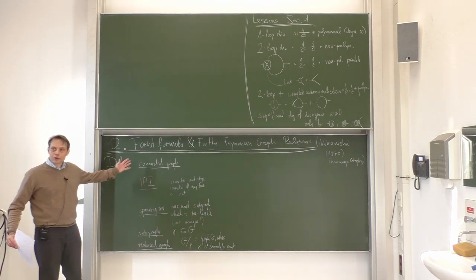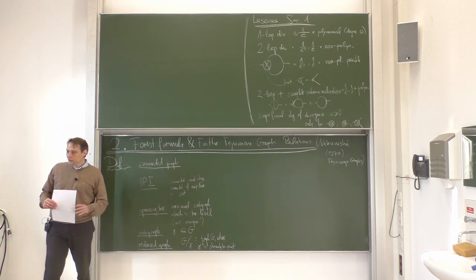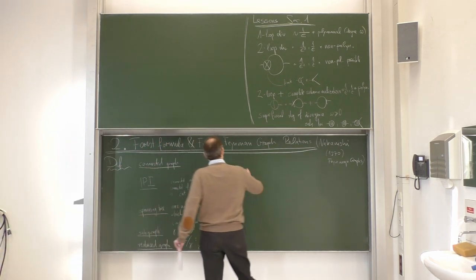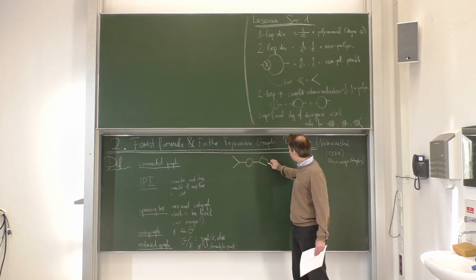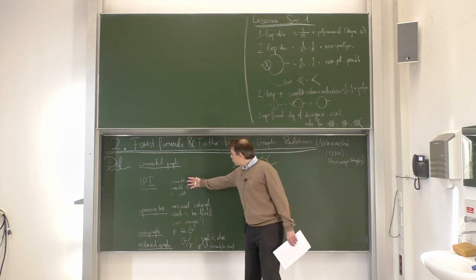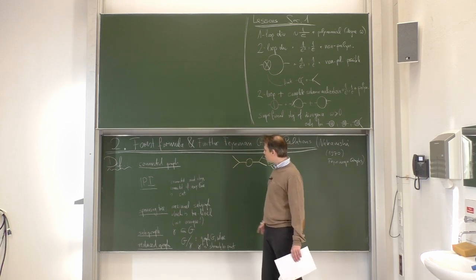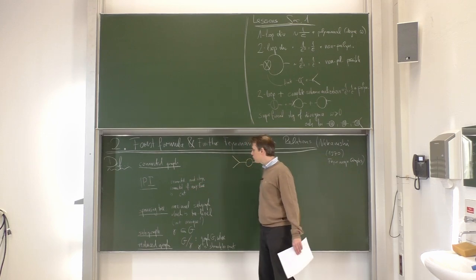Let me go through some definitions associated with Feynman graphs. First of all, there are so-called connected graphs — what this is is obvious, so let me just draw an example. More interesting and important is the definition of one-particle irreducible graphs. These are Feynman graphs which are connected and stay connected if we cut any internal line.